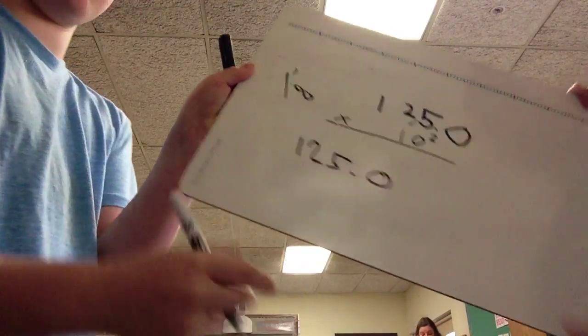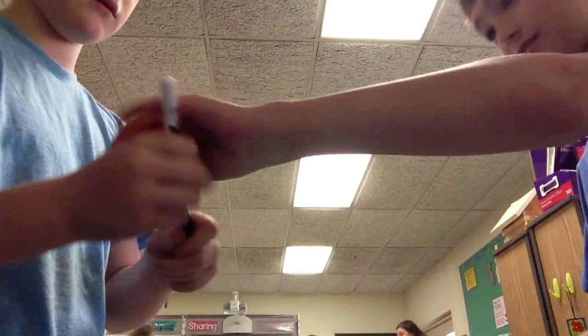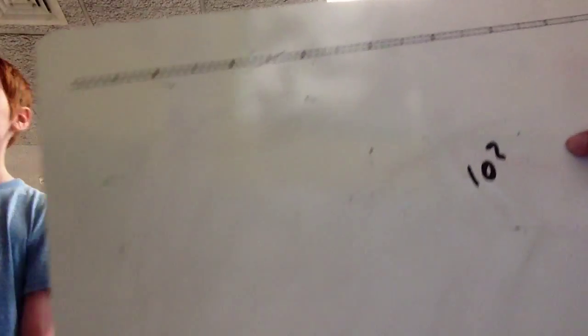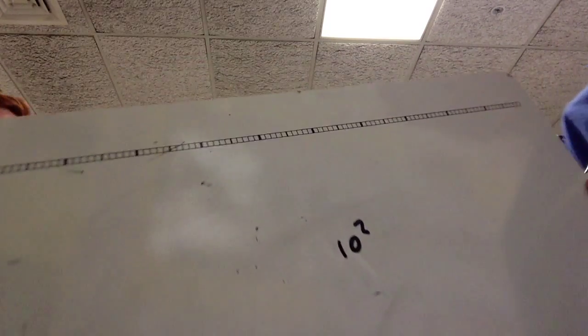Alright, I'll explain how it works. Basically, if you have an exponent on a number, it means whatever that exponent is, you have to multiply 10 or whatever it is by that exponent. So it's 10 times 10 if there's a second exponent.